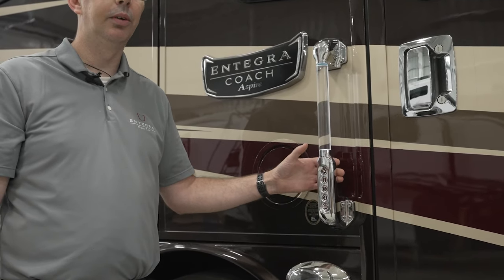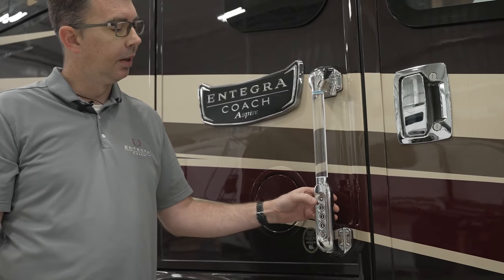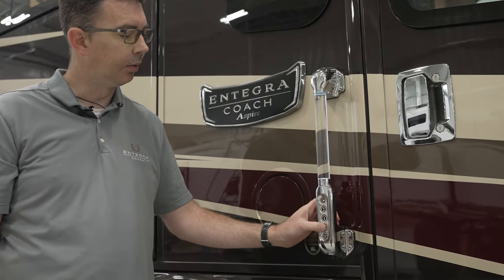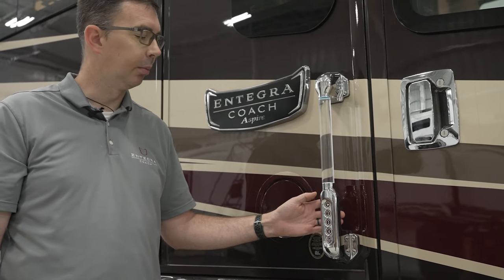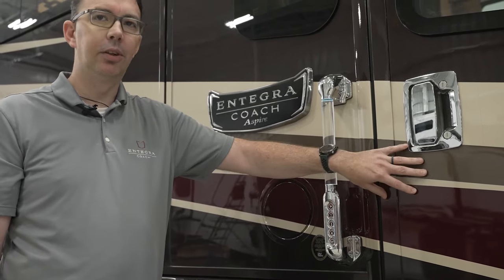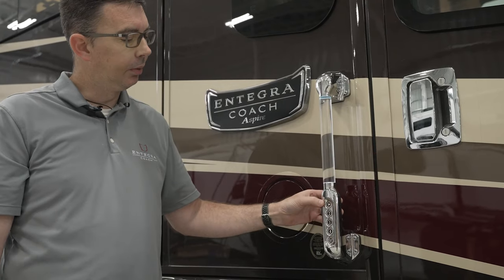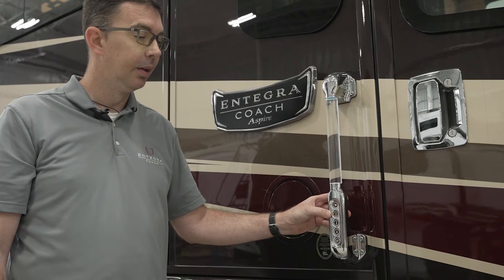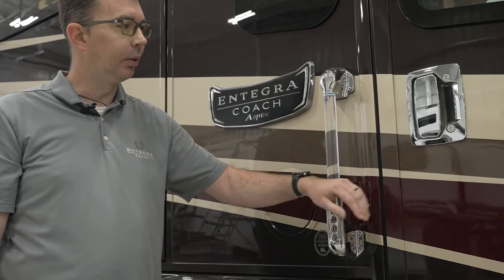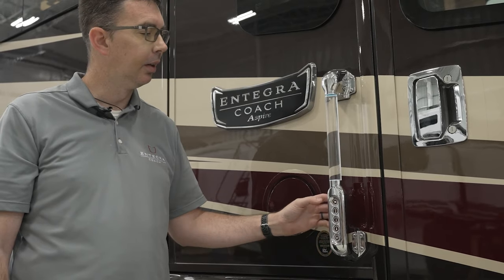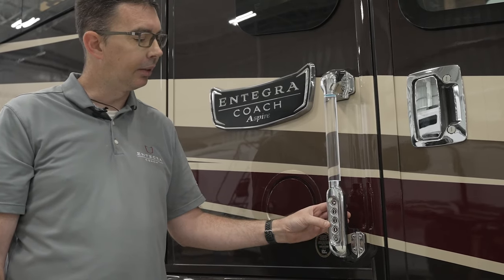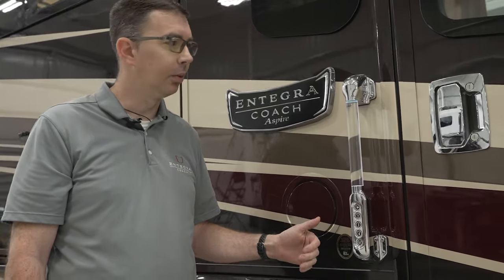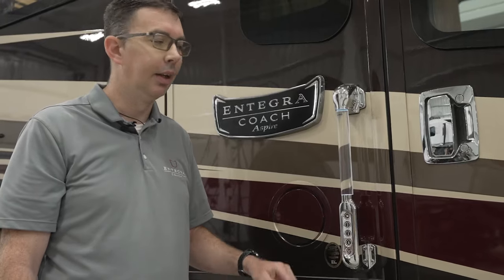To unlock, we use a default access code. That access code is simply 1-2-3-4-4, then press and release the one button to unlock just the entry door. If you enter the same 1-2-3-4-4 five-digit access code and press and release the two, that will unlock the entry door and also enable cargo door access. If you enter the five-digit access code and press the three button, that enables access to the cargo doors only, without affecting the entry door.